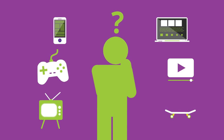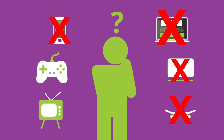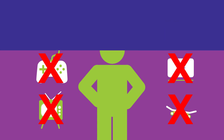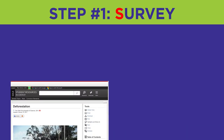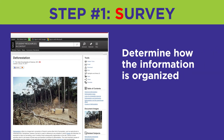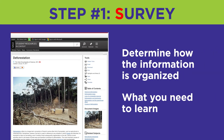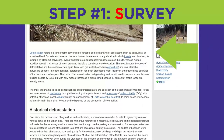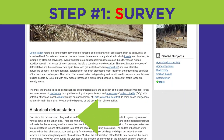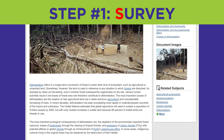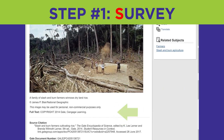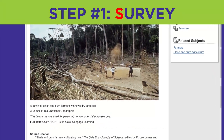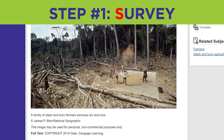Before you begin, be sure to minimize distractions so you can focus on reading and remembering. The first step in SQ4R is survey, intended for you to determine how the information is organized and what you need to learn. Take about a minute to read the introduction, headings, and any subheadings, and the summary or conclusion. Check out graphs, charts, and images, and skim their descriptive captions. This will help you visualize and make sense of the text when you read it through later.